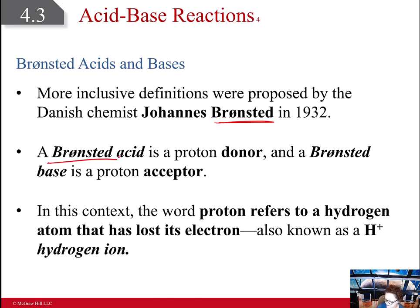Johan Bronsted, who was a Danish chemist, in 1932 came up with a slightly different definition. A Bronsted acid is a proton donor, and a Bronsted base is a proton acceptor. In this context, a proton refers to a hydrogen ion, so that's a hydrogen element that's lost its electron.